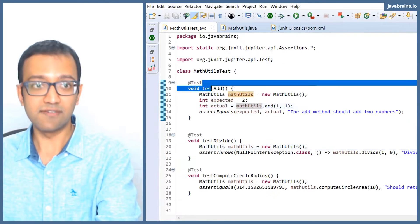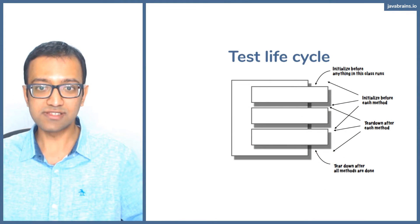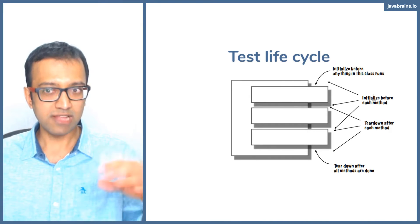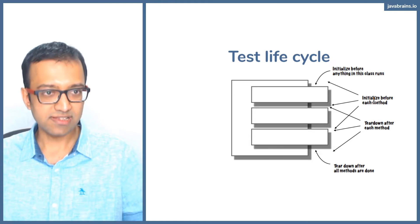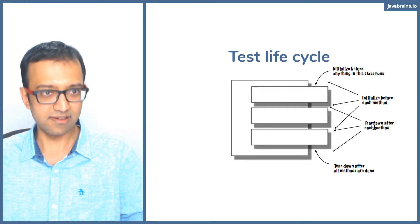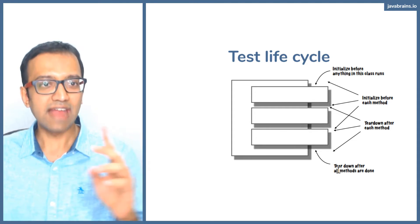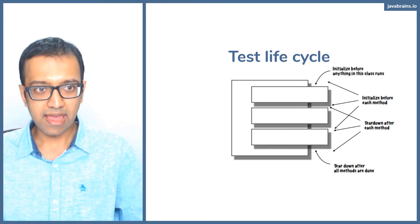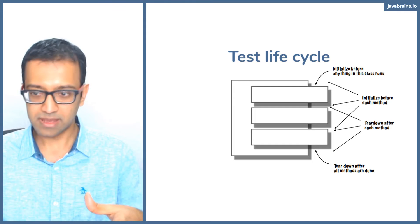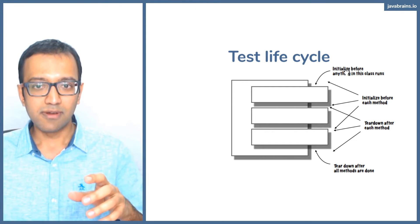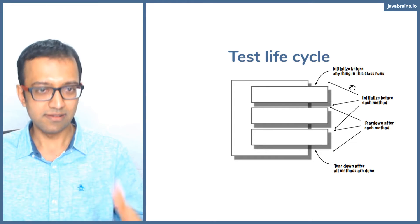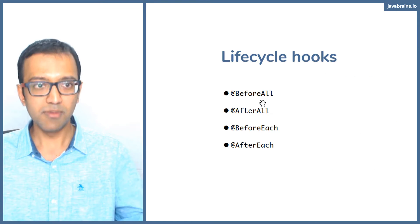For instance, with our MathUtils test we have three methods. If I use the 'before all' hook, that code runs once before any of those three methods run. Then the 'before each' hook runs once before testAdd, once before testDivide, and once before testCircleRadius. The 'after each' hook executes immediately after testAdd, after testDivide, and after testCircleRadius. Then 'after all' executes just once at the very end. These are the lifecycle hooks JUnit provides, and they all have annotations you can put on your methods.